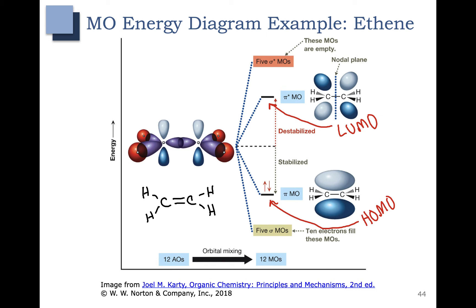As we look at the pi bonding molecular orbital, remember that it has a region above and below the atoms. When we look at the pi antibonding molecular orbital, we now have to add a nodal plane. This is incredibly unhappy, so if we were to add electrons to the pi antibonding molecular orbital, that would break the bond or destabilize the system. We only have the bonding molecular orbitals filled, so our system is considered to be stabilized.